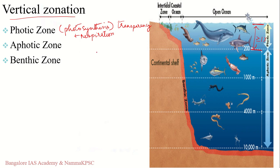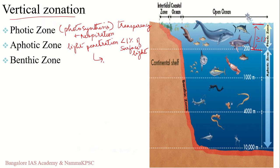The aphotic zone is the lower layer of the aquatic ecosystem where light penetration and plant growth are restricted — the sunlight reaching this depth is less than 1% of that at the surface. Therefore, photosynthetic activity is not supported and oxygen is not produced. However, respiration and oxygen consumption still continue. The aphotic zone, also known as the profundal zone, is thus a zone of oxygen consumption.